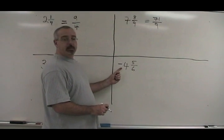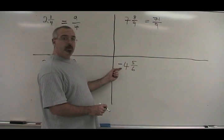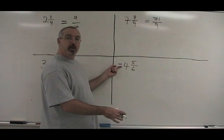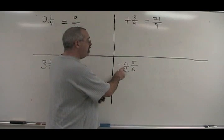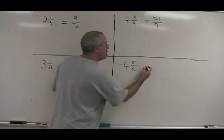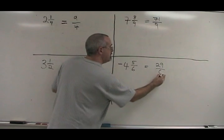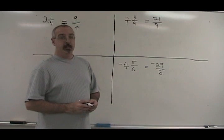What if we have a negative mixed number, and we want to convert it to an improper fraction? What we do is we ignore the negative sign while we do our operation, and then we apply the negative sign to our answer. 4 times 6 is 24, plus 5 is 29. The denominator stays the same. It was negative, so our improper fraction is negative.